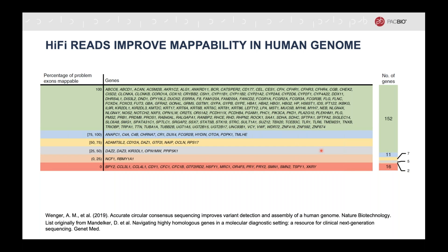We have many examples here. This is a figure from the Wenger et al. paper. We examined a list of 193 medically relevant genes with one or more exons that were difficult to map with short reads. For over 90% of the genes on this list, HiFi reads improved the mapping on at least some of these problem exons, and for 152 of the genes, HiFi reads were unambiguously mapped through all problem exons for this gene.